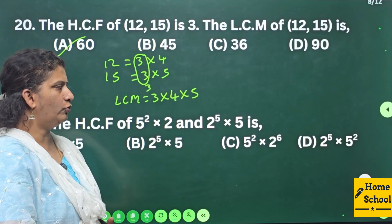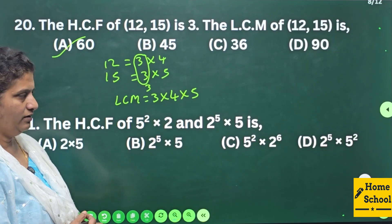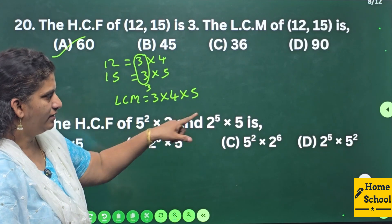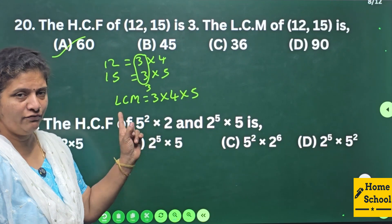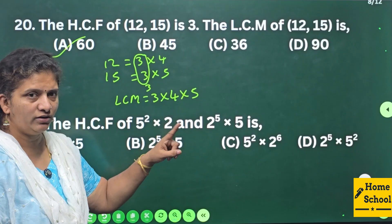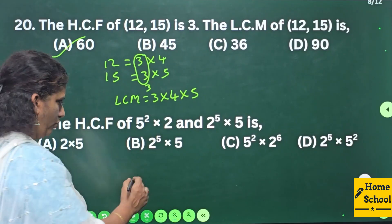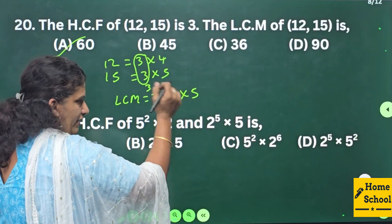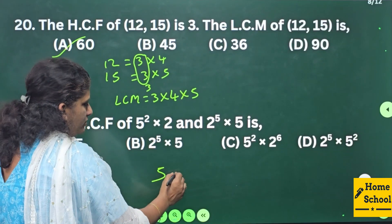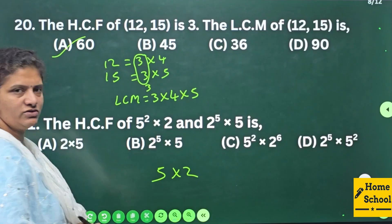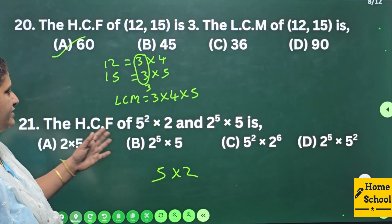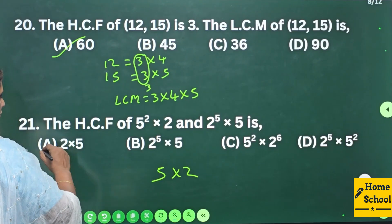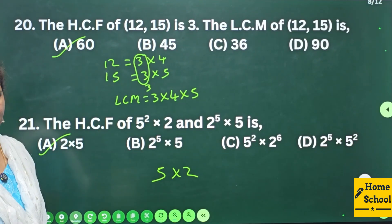Question 21: The HCF of 5²×2 and 2⁵×5 — observe carefully. Here there are two 5s and there one 5, so 1 five is common. Here one 2 and there five 2s, so one 2 is common. Therefore HCF = 5 × 2 = 10. That is your answer.